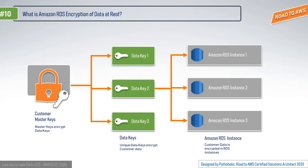Amazon RDS also supports Transparent Data Encryption (TDE) if you're using SQL Server or Oracle. TDE is a technology employed by Microsoft, IBM, and Oracle to encrypt database files at the file level. TDE solves the problem of protecting data at rest by encrypting databases on the hard drive and on backup media. Importantly, TDE does not protect data in transit or data currently in use.